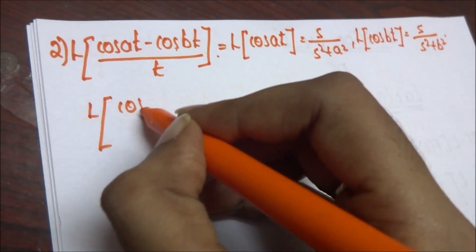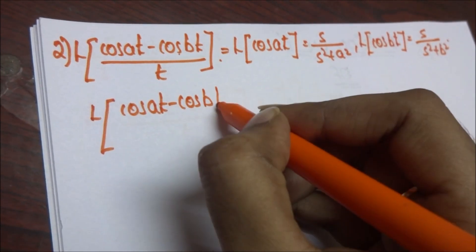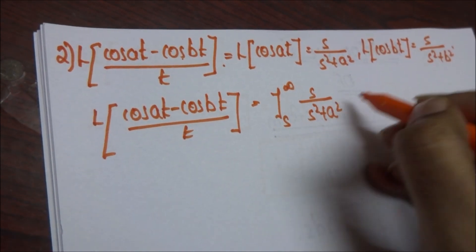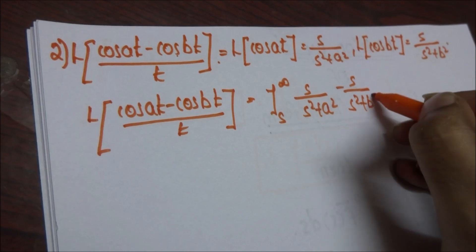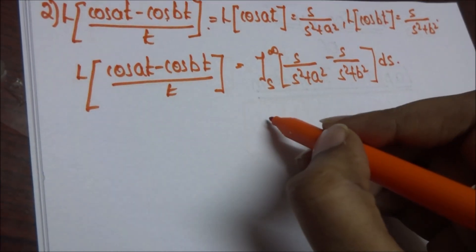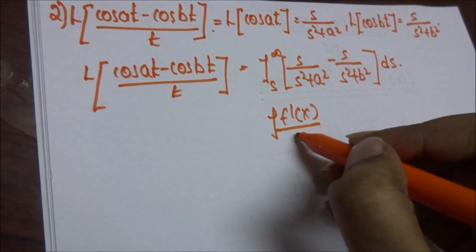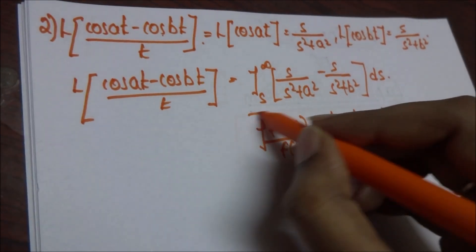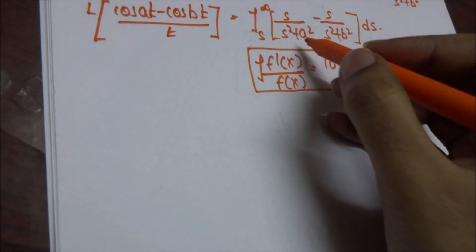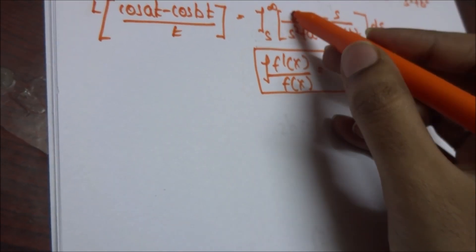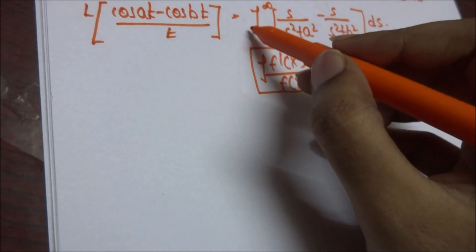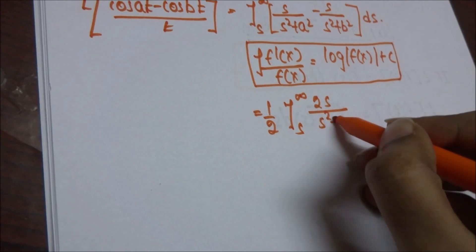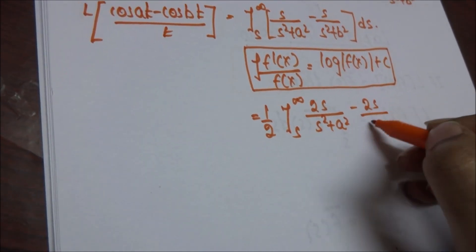Laplace of (cos(at) minus cos(bt))/t is equal to the integral from s to infinity of [s/(s² + a²) minus s/(s² + b²)] ds. We know that the integral of f'(x)/f(x) dx is equal to log(f(x)) + C. Here f(x) is s², whose derivative is 2s. Since there is only s in the numerator, we multiply and divide by 2: (1/2) times the integral from s to infinity of [2s/(s² + a²) minus 2s/(s² + b²)] ds.